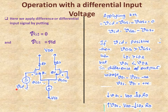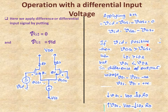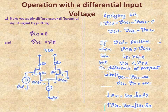If VID is positive, then VGS1 is greater than VGS2. When VGS1 is larger, ID1 will be larger and ID2 will be smaller. Regarding drain voltages: VD1 will be smaller and VD2 will be larger. Looking at the VD1 equation: VD1 = VDD minus ID×RD. If ID1 is large, more is subtracted from VDD, so VD1 decreases. If ID2 is small, less is subtracted, so VD2 increases.